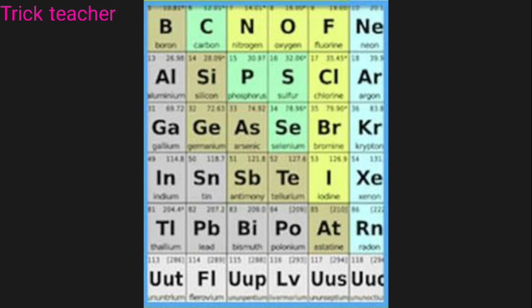Next, Group 18 — the Noble Gases: Neon, Argon, Krypton, Xenon, and Radon. This is just a trick for us to remember these elements easily.